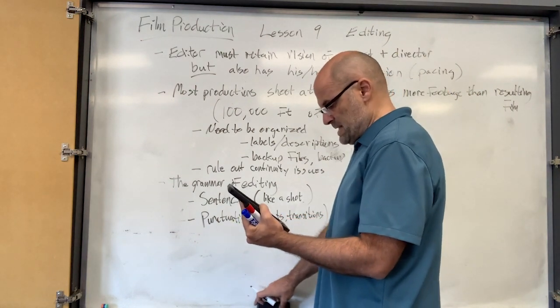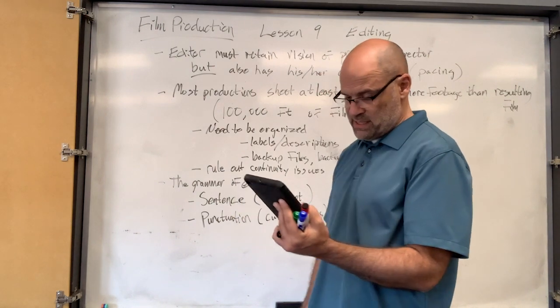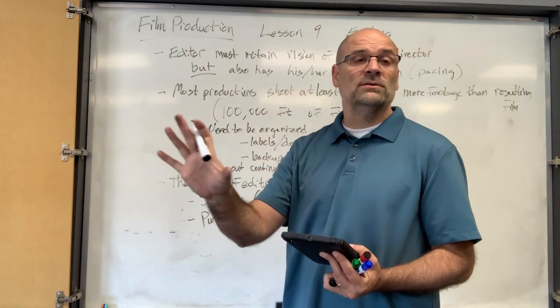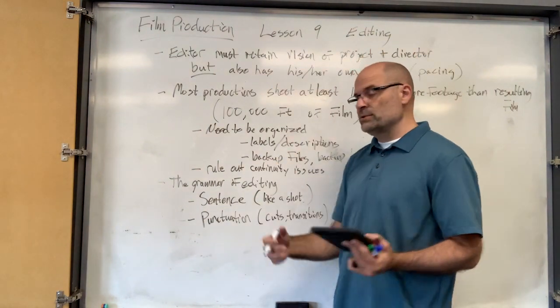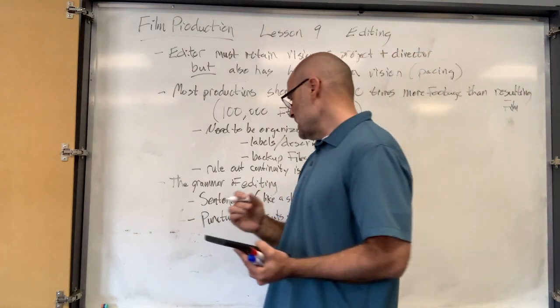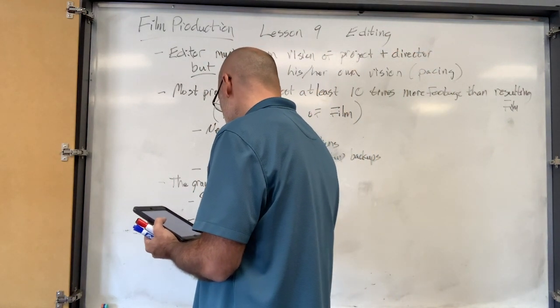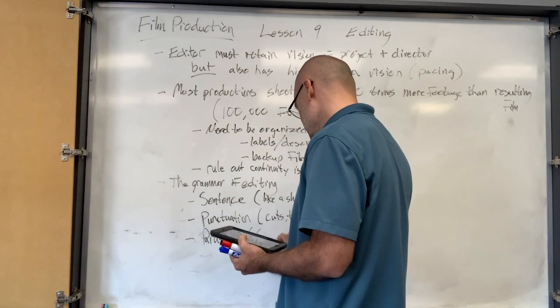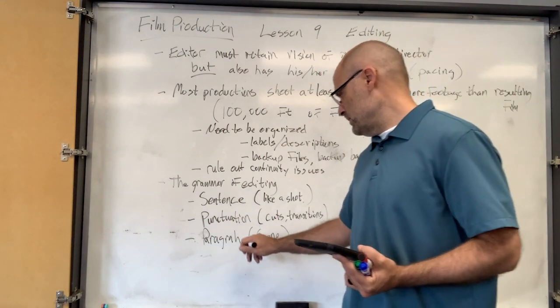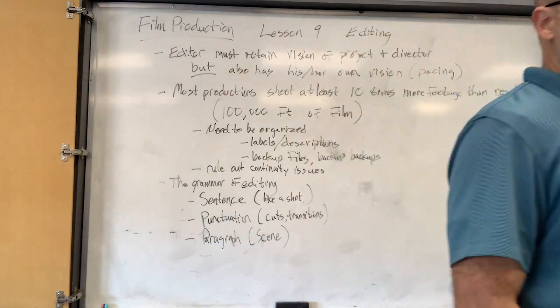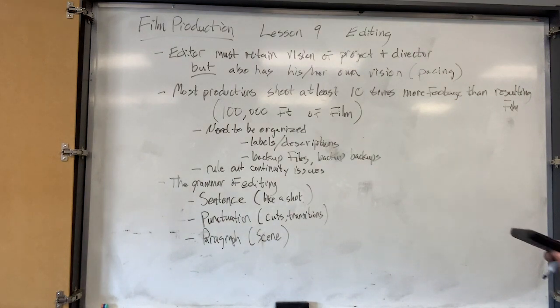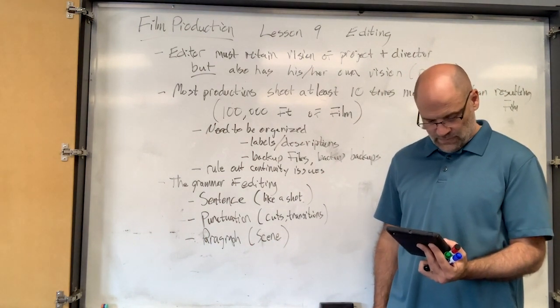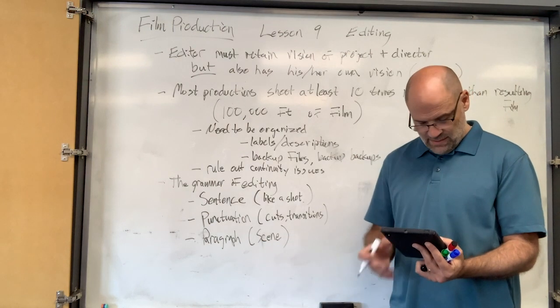These are different types of punctuation. So this is how a shot ends - cuts, dissolves, fades, major transition, possibly beginning or end of a story. That's where you would see a fade. Like at the end of a movie, it kind of fades to black slowly. So that's punctuation. Then you've got a scene which is like a paragraph, but then all these different scenes make up the movie. Each paragraph is like a scene and it goes on to the next paragraph or the next scene.